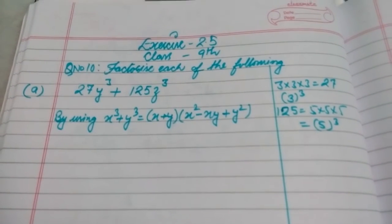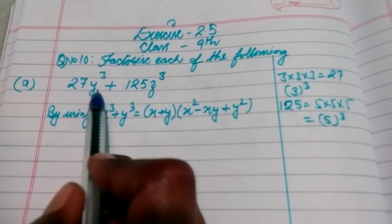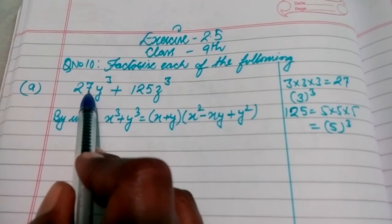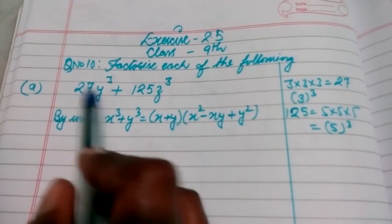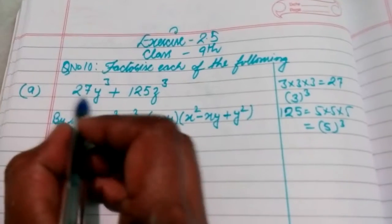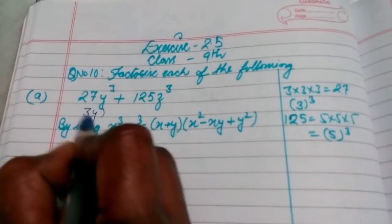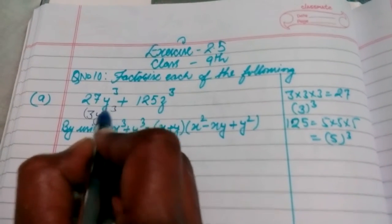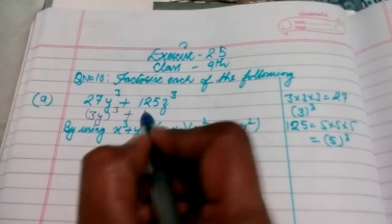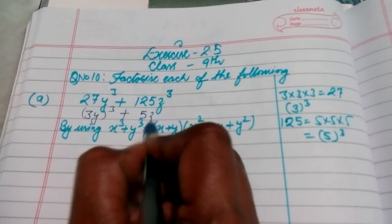You can see that in this term there is a cube over y, but not over 27. I can change 27 to 3³, so I can write 27y³ as (3y)³ — because I am writing 27 as 3³. And plus, 125 can be written as 5³, or I can write 125z³ as (5z)³.